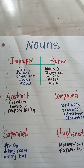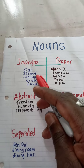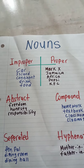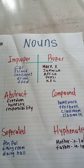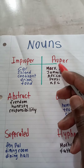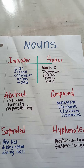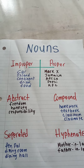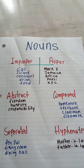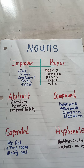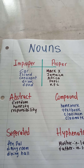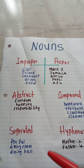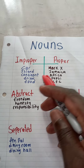So if I say an improper noun, a car would be an improper noun because it's not specific. A Mark X, a Toyota Corolla, it could be a Range Rover, it could be a Lexus or a BMW — that is specific. It's a proper noun.